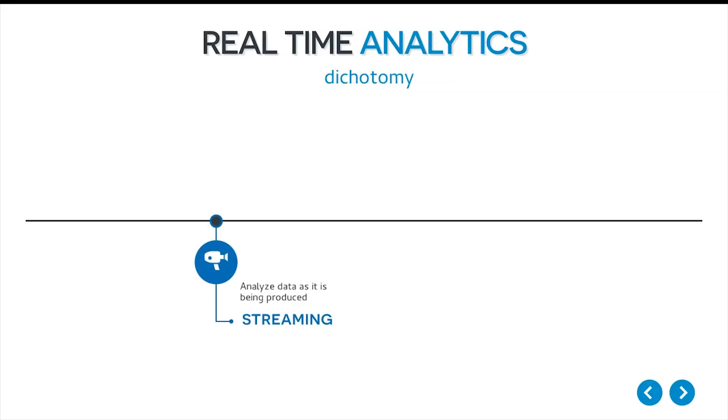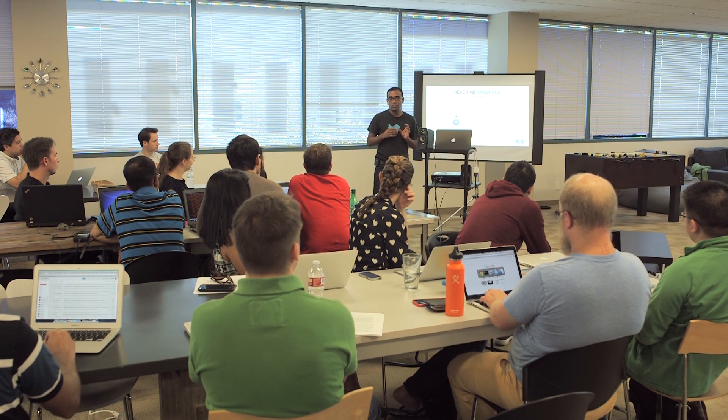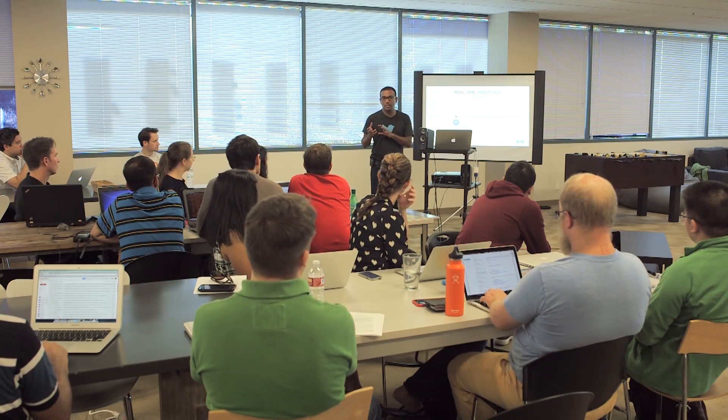In streaming, you do analytics immediately after the data is produced. The moment the data is produced, it goes through some kind of a real-time pipeline and it's constantly spitting out analytics. One of the characteristics of streaming is that the analytics runs continuously on and on for days and months — it keeps on running.